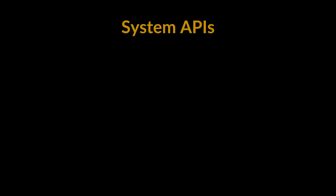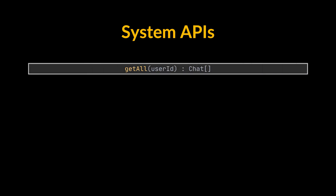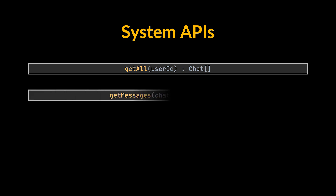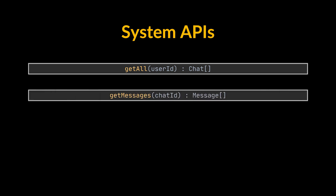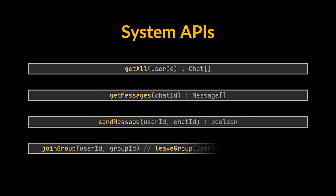Next is the API design. Some potential APIs our service will need to expose are: get all chats or groups for a given user ID; get messages returning all messages for a given chat or group ID; send messages to send a message from a user to a chat or group; and join group or leave group, which allows a user to join or leave a group.